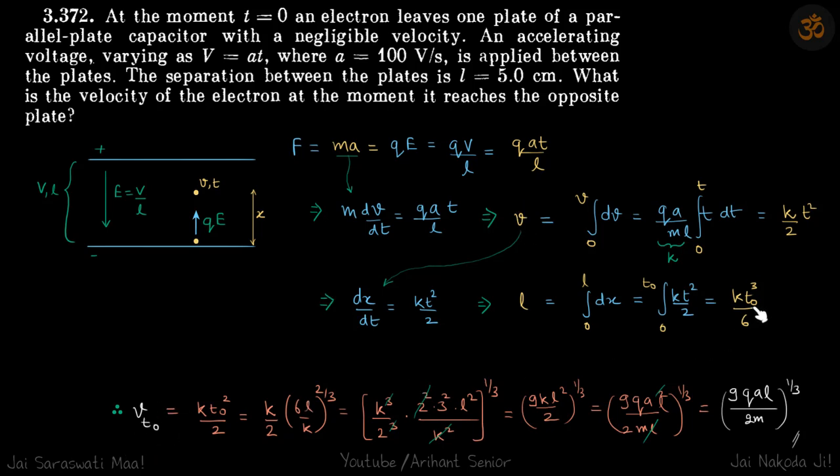From here the value of T0 will be 6L by K to the power 1/3. That I will put here and get our velocity at time T0, which is our answer.